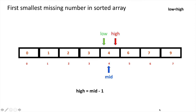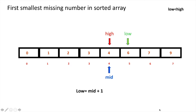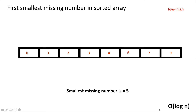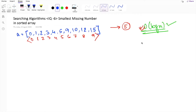After reassigning high to mid minus 1, the low, high, and mid pointers all point to the same element — index 4, value 4. On the third iteration, the mid value matches its index, meaning no missing element to the left, so we set low to mid plus 1. Now low points to index 5 and high to index 4, which violates our condition low less than high, so we return the value of low — which is 5. We have found the smallest missing number in this sorted array.